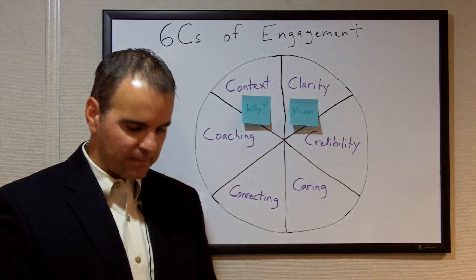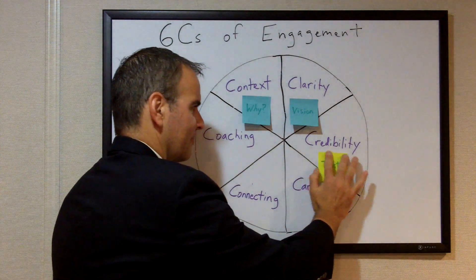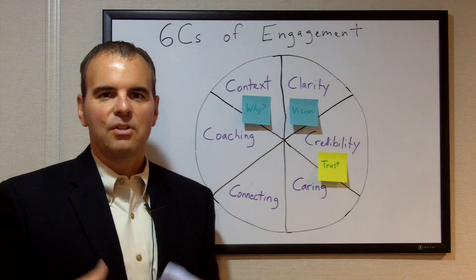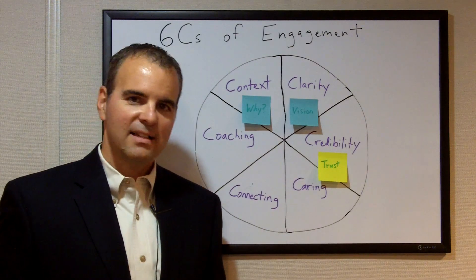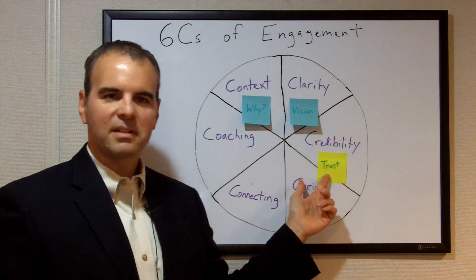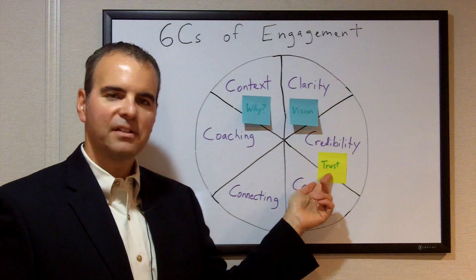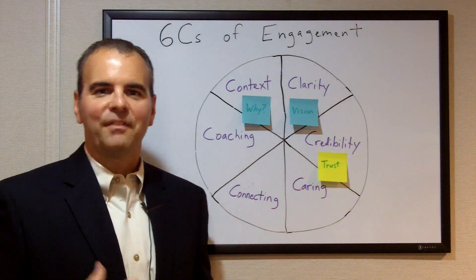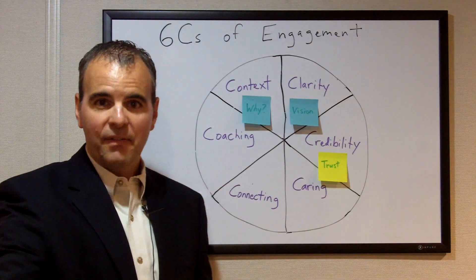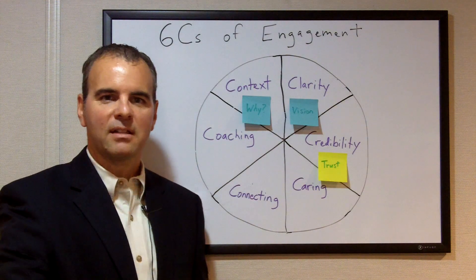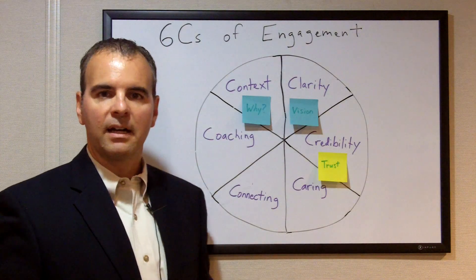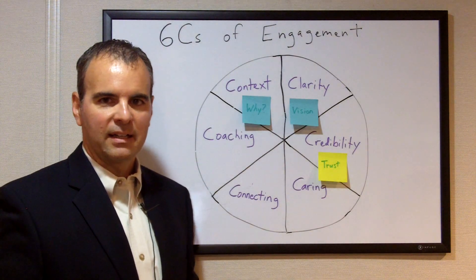Our next C is credibility, and I'm moving on to a different color. Credibility is all about whether I am worthy of the trust of my team. Do I have the competence and honesty that's necessary for them to want to follow me? This is 100% my responsibility, and so I'm giving it its own color. Our next three C's have to do with the people on our team — am I focused enough on them and their needs? Am I generous with my leadership toward them in putting that focus on them?